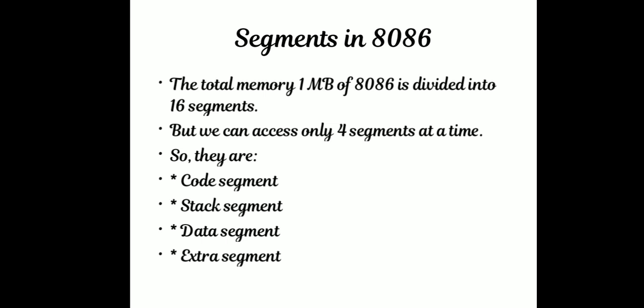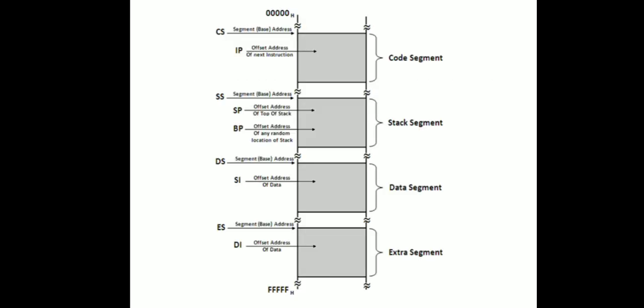The three segments — code segment, stack segment, and data segment — each have 64 kilo-locations. Additionally, there is the Extra Segment, which does not have a particular specific purpose and can be used for additional data. So the four segments are code, stack, data, and extra segment.